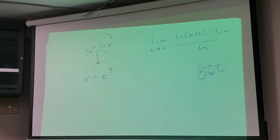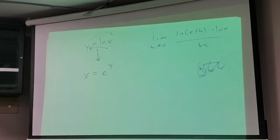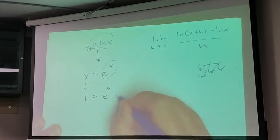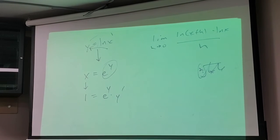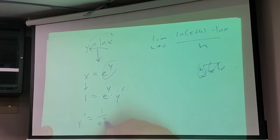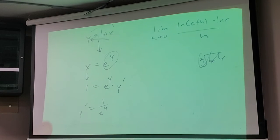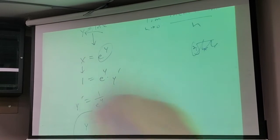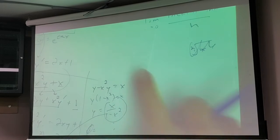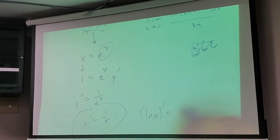Do we know how to take the derivative of e to something? Hell yeah — it's one of our favorites. So now taking the derivative: the derivative of x is 1, and the derivative of e to the y is e to the y times y prime. So y prime equals 1 over e to the y. And what was e to the y? It's x! So y prime equals 1 over x. The derivative of natural log of x is 1 over x.